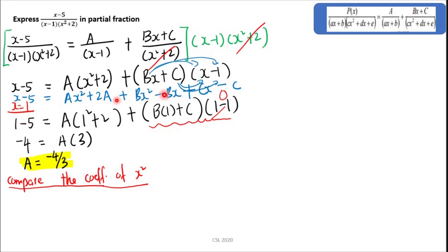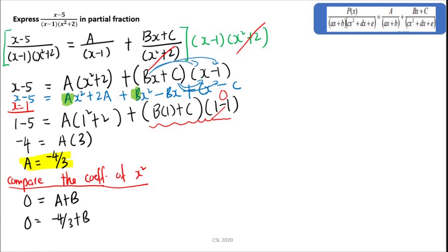Look at the equation. The coefficient of x squared on the left-hand side is 0, since there is no x squared term. Therefore, 0 equals A plus B. Since A equals negative 4 over 3, substituting gives 0 equals negative 4 over 3 plus B. Therefore B equals 4 over 3.